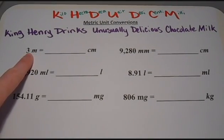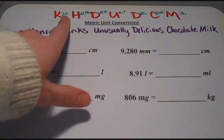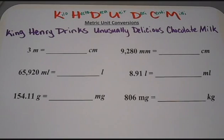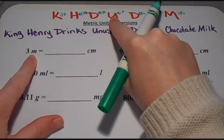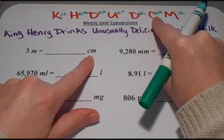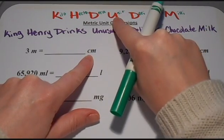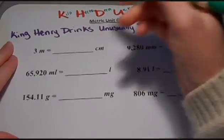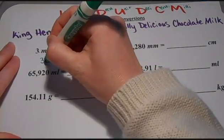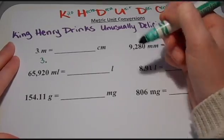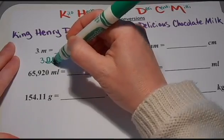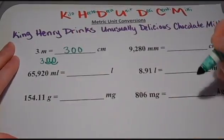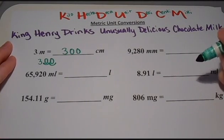I have three meters and I need to change that into centimeters. I'm going to use my letters to tell me how to move my decimal point. Starting with my unit — the meter — I count over two spaces to get to centi, which is the unit I'm trying to find, so I move the decimal two spaces to the right. I fill in the empty spots with zeros, giving me 300 centimeters. Three meters is equal to 300 centimeters.